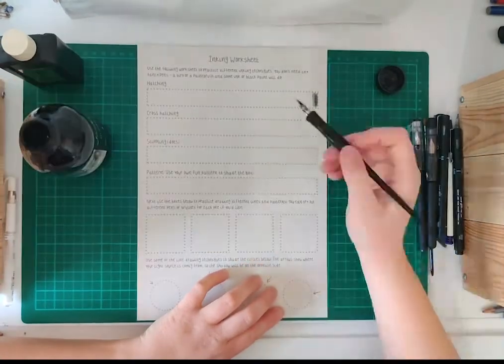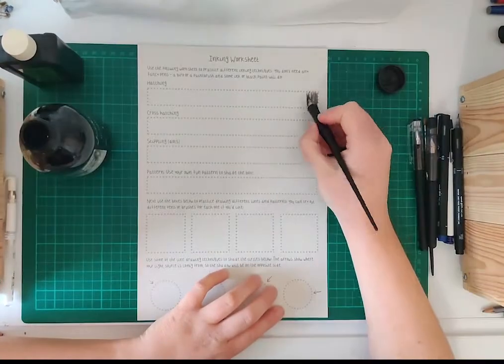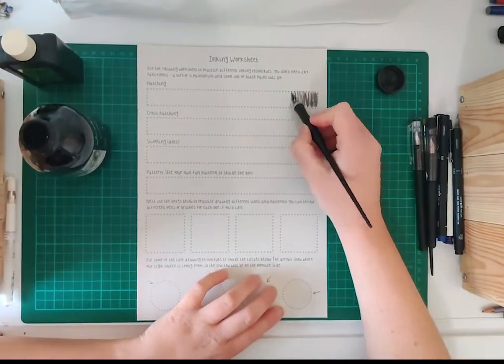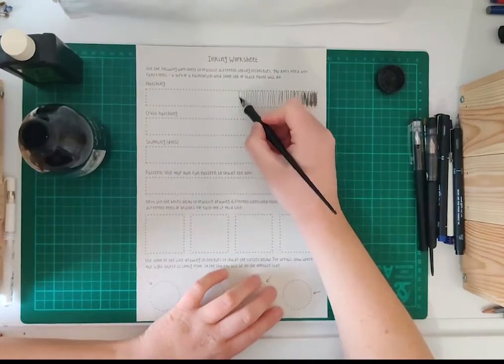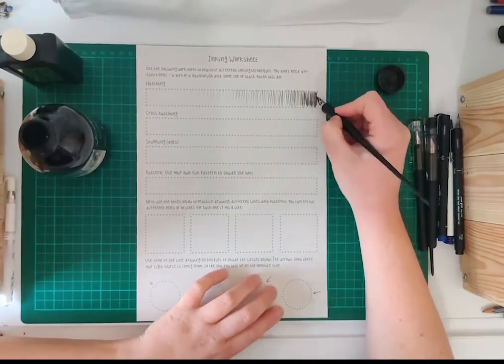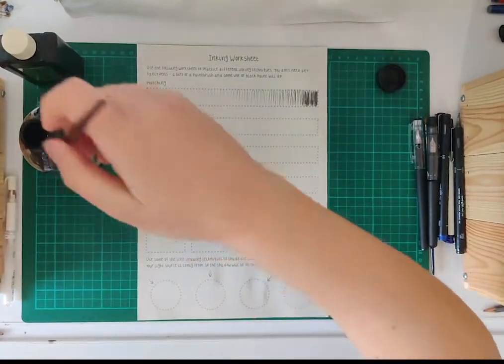Starting at the darkest end, all the lines will be really close together to make it almost black. As we go along, I'll space the lines out more and more until we stop them altogether, leaving the other end white.